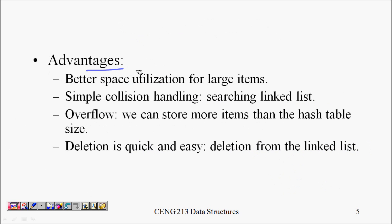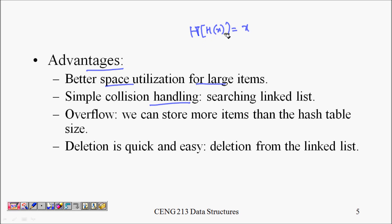What are the advantages? Better space utilization for large items, and simple collision handling. Without chaining, a hash table would simply overwrite a value, and you cannot store more than one element per cell.